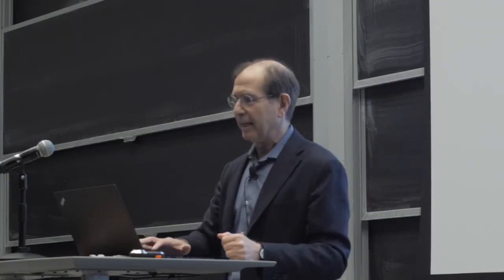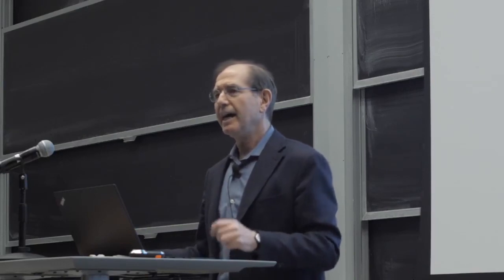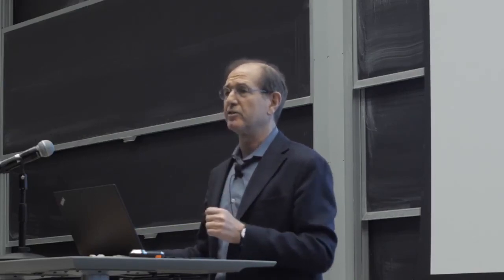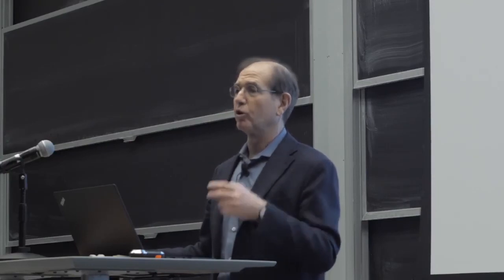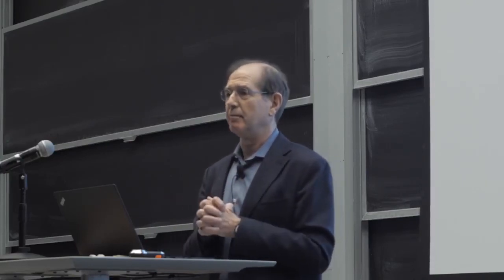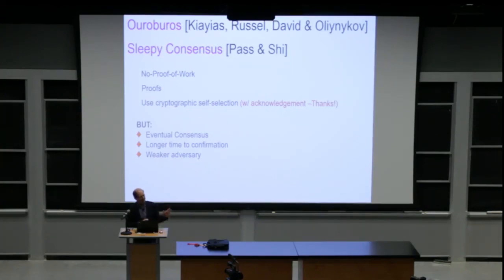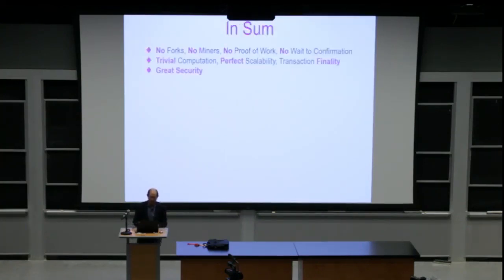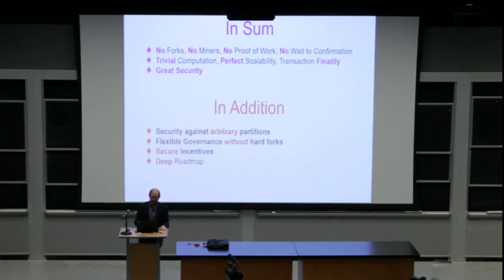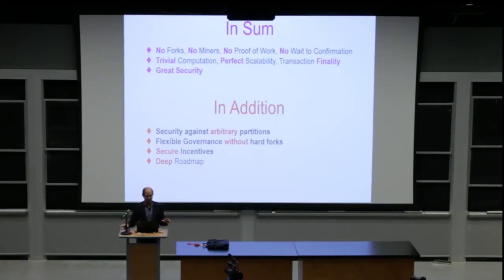There are related projects like Ouroboros and the Sleepy Consensus that I respect — they are not proof of work, they emphasize proofs, they are sound — but I still prefer Algorand. In sum, Algorand has no forks, no miners, no proof of work, no waiting for confirmations, trivial computation, perfect scalability, transaction finality, great security, and security against an adversary who can partition the network arbitrarily for an arbitrarily long time.